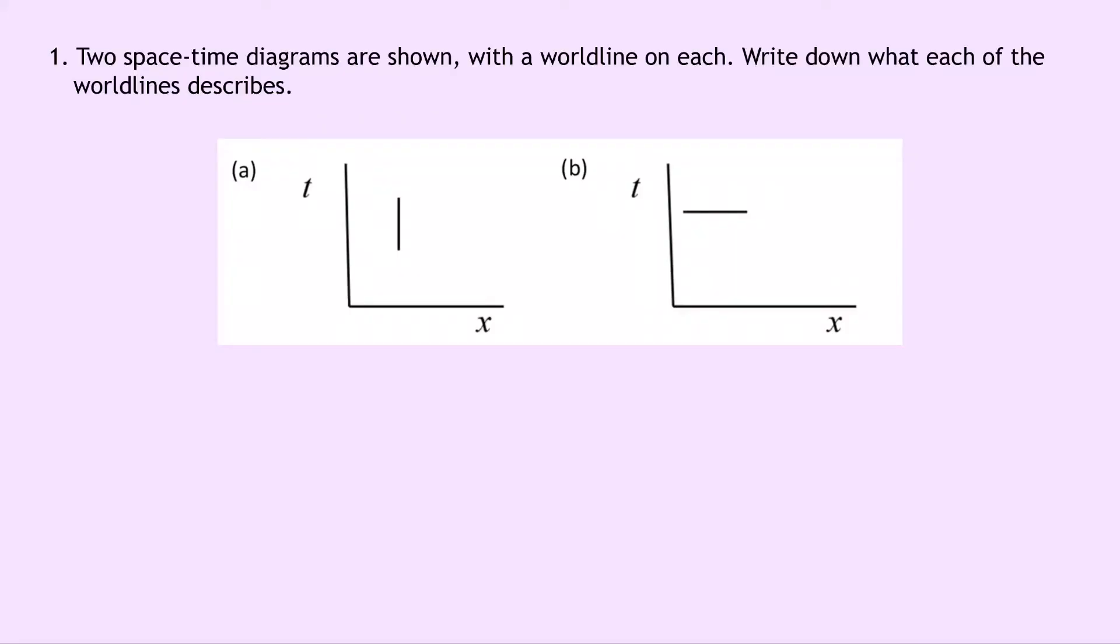Question one says that two space-time diagrams are shown with a worldline on each. Write down what each of the worldlines describes. So you'll notice in both diagrams for part A and B we've got the time axis and the x axis. So we're dealing with the x dimension of space. And in part A you'll notice we've got a straight vertical line. So that means that our position x is going to stay the same over time. So that's the same as a stationary object with a constant x.